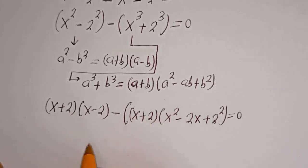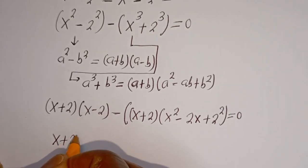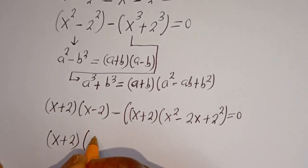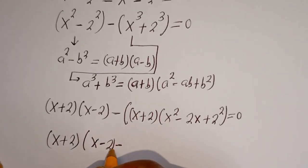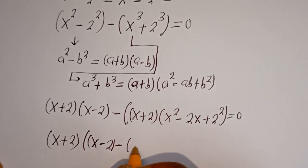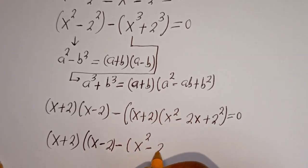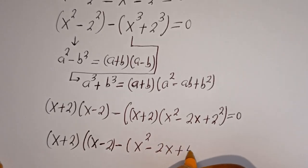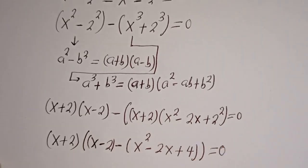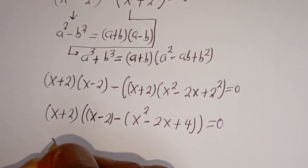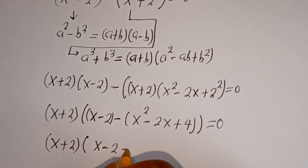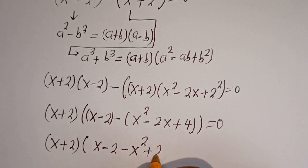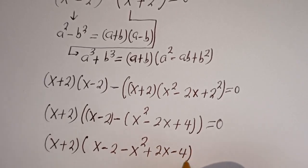Now here s plus 2 is common, let's bring it out. We have s plus 2 bracket. If you divide this by s plus 2, we have s minus 2. Then if you divide this by s plus 2, we have s squared minus 2s plus 2 squared, that is 4, is equal to 0.